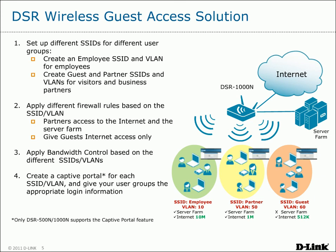Finally, create a captive portal for each SSID and VLAN, and give your different user groups the appropriate login information. Now all your users have secure wireless access while controlling access privileges and bandwidth usage.